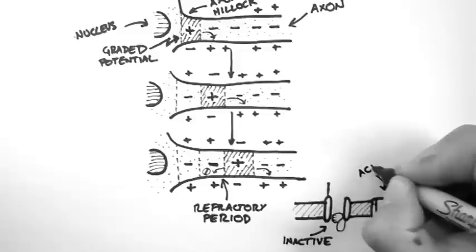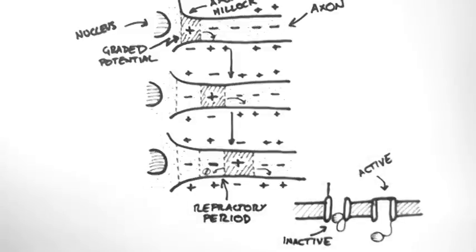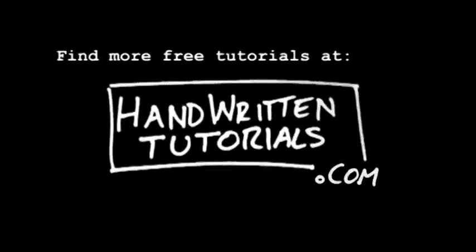So this is an overview of how action potentials propagate down a membrane. This membrane doesn't have to be an axon. It could be the membrane of a cardiac or a muscle cell. Now you should have a pretty good understanding of how action potentials work and the molecular biology behind them. So for more free tutorials and the PDF for this tutorial, visit www.HandWrittenTutorials.com